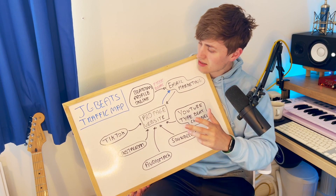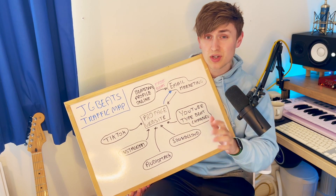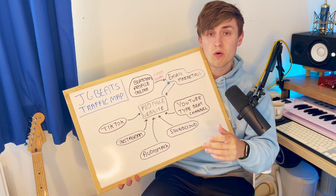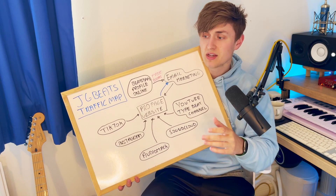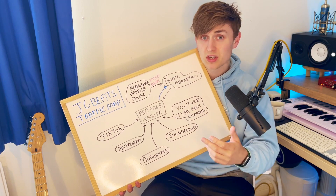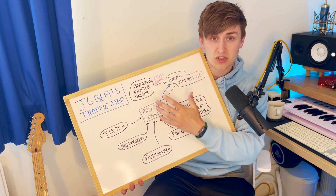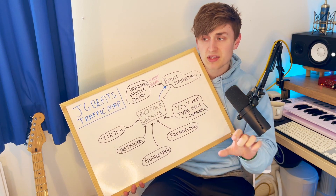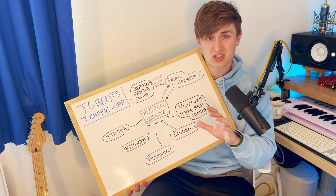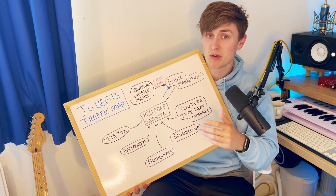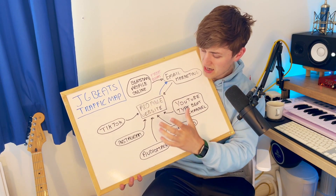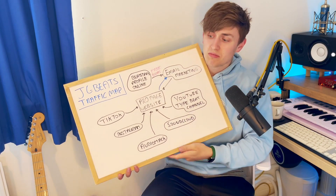Let's start with the YouTube type beat channel. This drives traffic to both my Pro Page and beat store, but mainly to the Pro Page. The idea is someone watches your beat on your channel, wants to purchase a license, clicks a link in the description, and goes to your Pro Page. I also have my website link in the comments below and in the description for anyone wanting to browse the full store, but on YouTube the focus is on direct beat sales to the Pro Page.